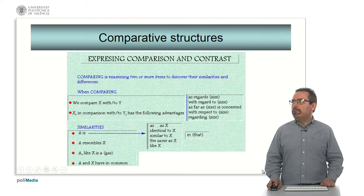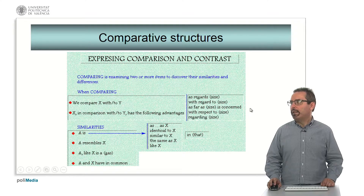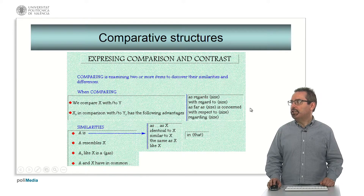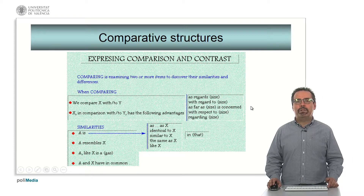Normally when we compare two things we examine the similarities and differences between two or more objects and products, and it is important to mention the aspects we are comparing. Here we have the five typical possibilities in English: 'as regards size', 'with regard to size', 'as far as size is concerned', 'with respect to size', or 'regarding size'. It is important not to mix them up because these are the five most widely used expressions to introduce the parameter we are comparing.